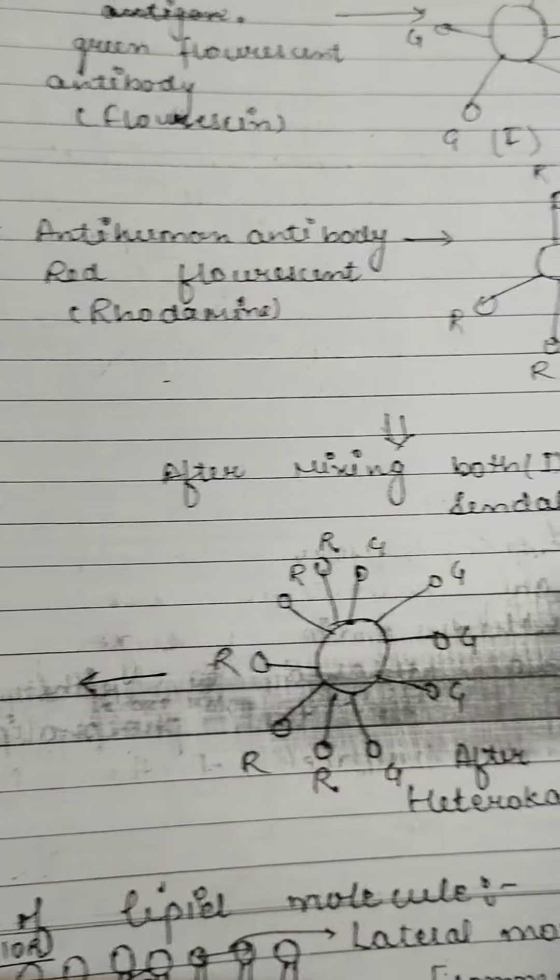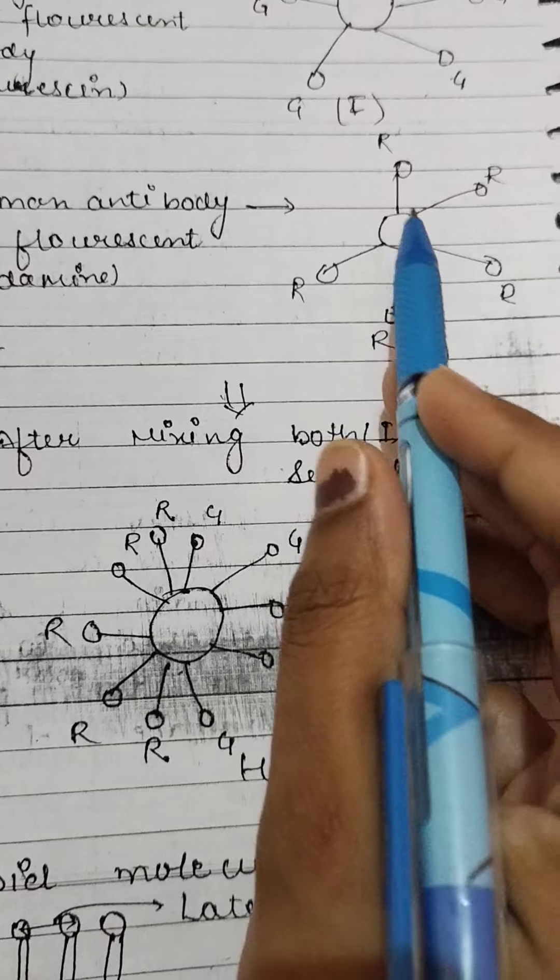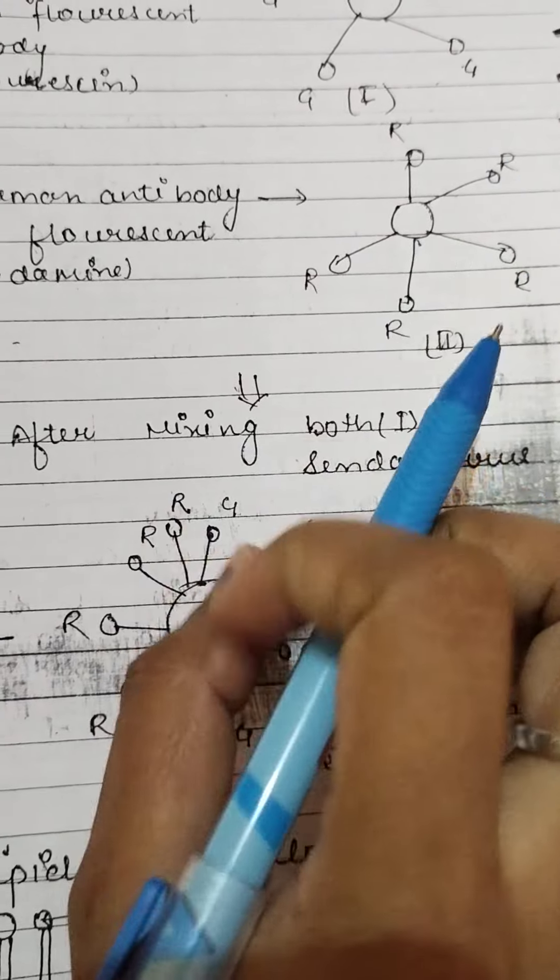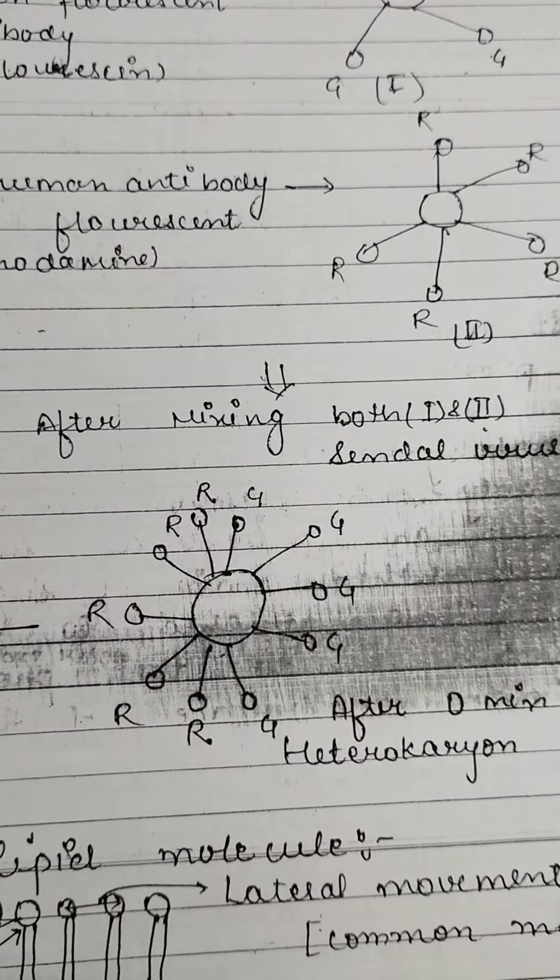You can see that the antibodies are red color, that is fluorescence.